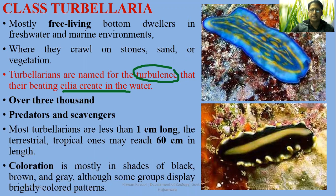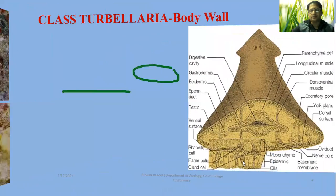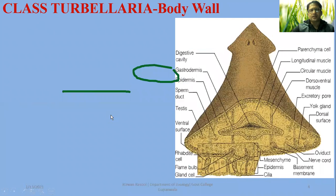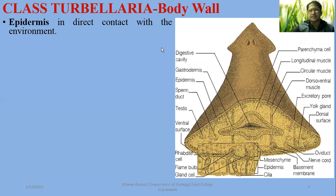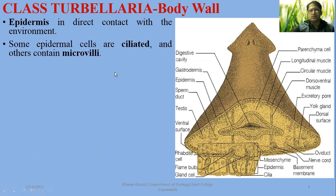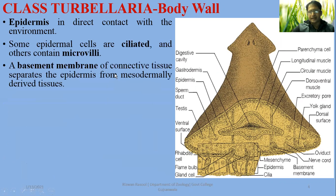The coloration varies depending upon the type of species — usually black, grey, brown, or some brightly colored species. If you look at the body wall, the outermost layer, which is ectodermally derived, is the epidermis. After the epidermis, the epidermal cells bear either cilia or microvilli.